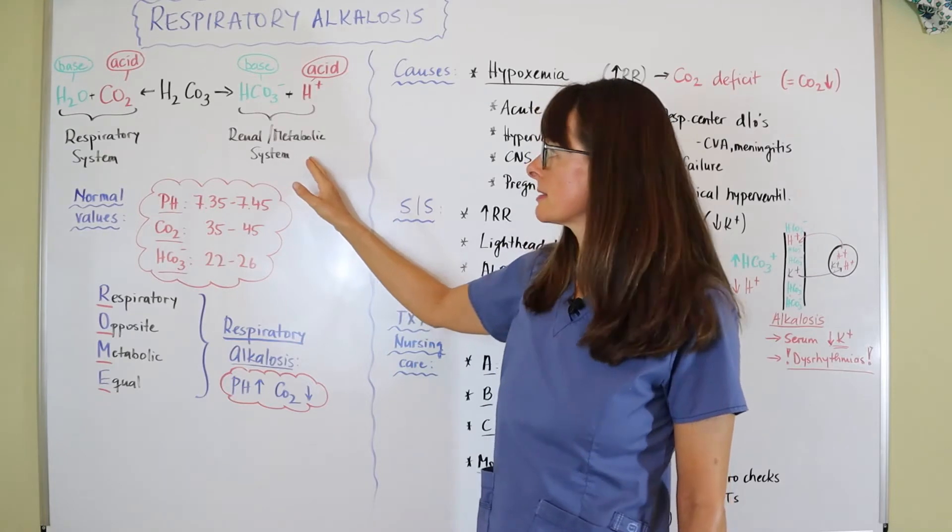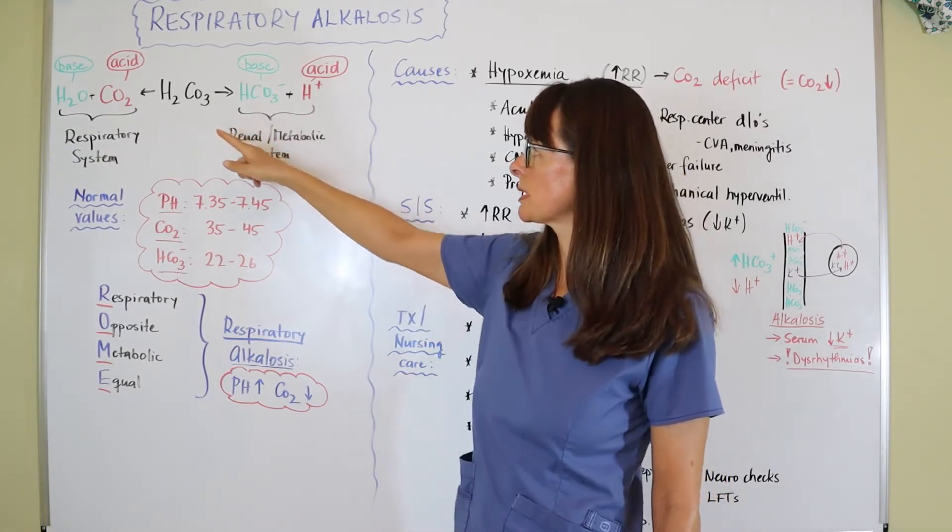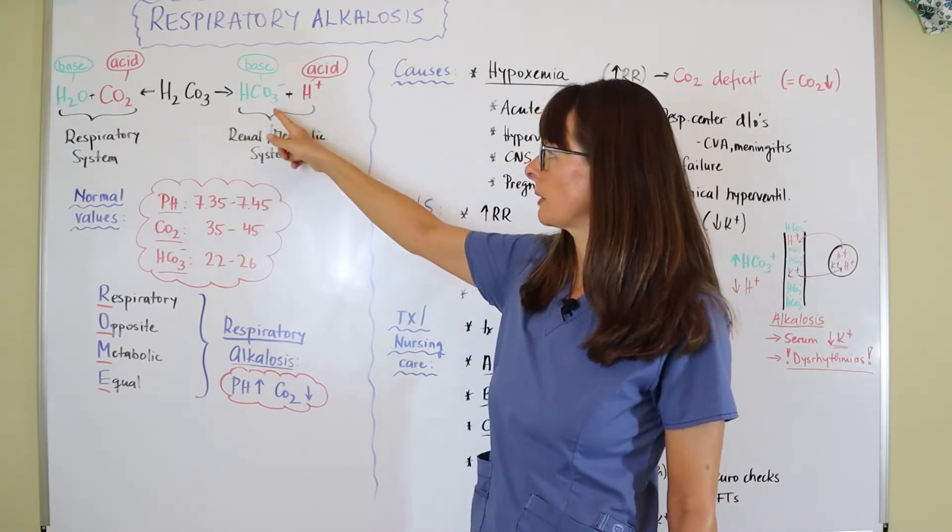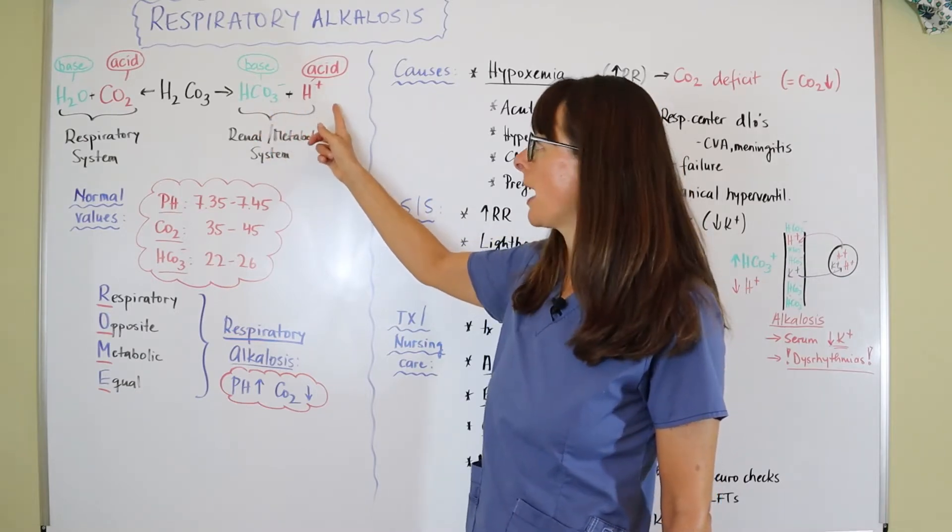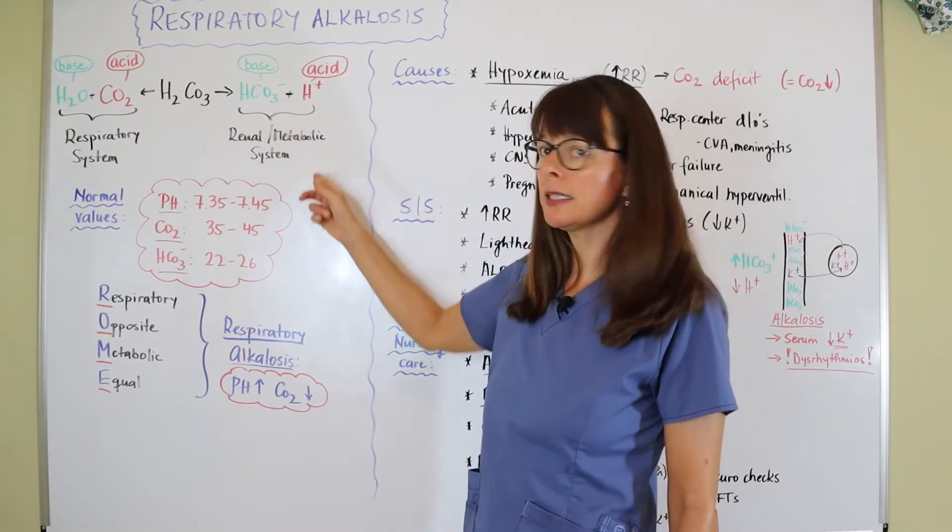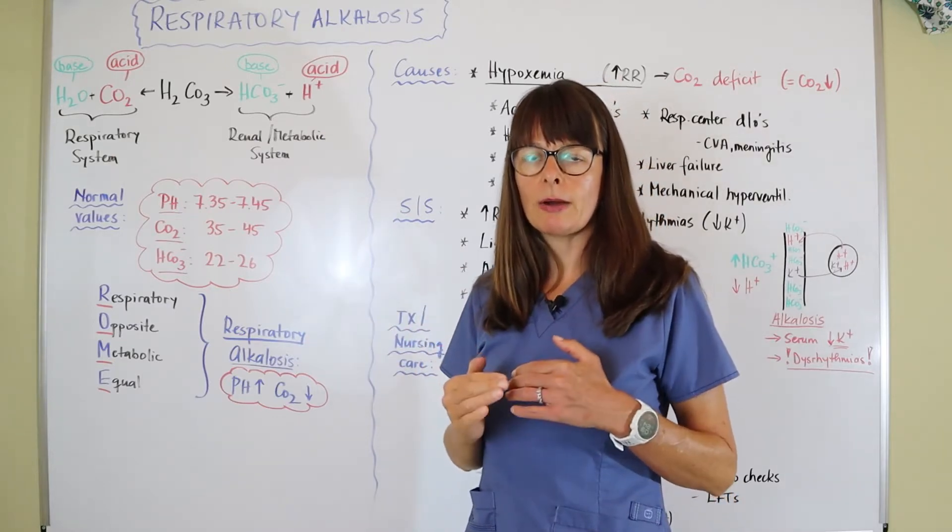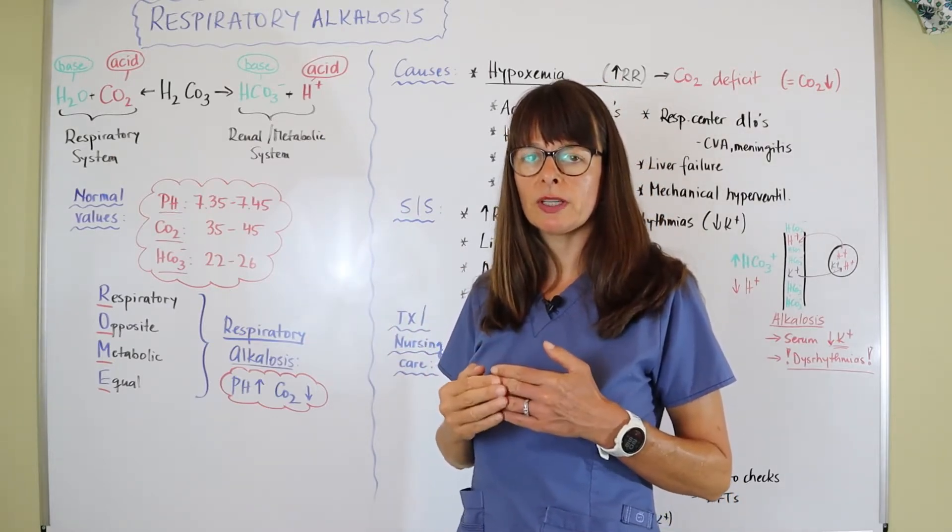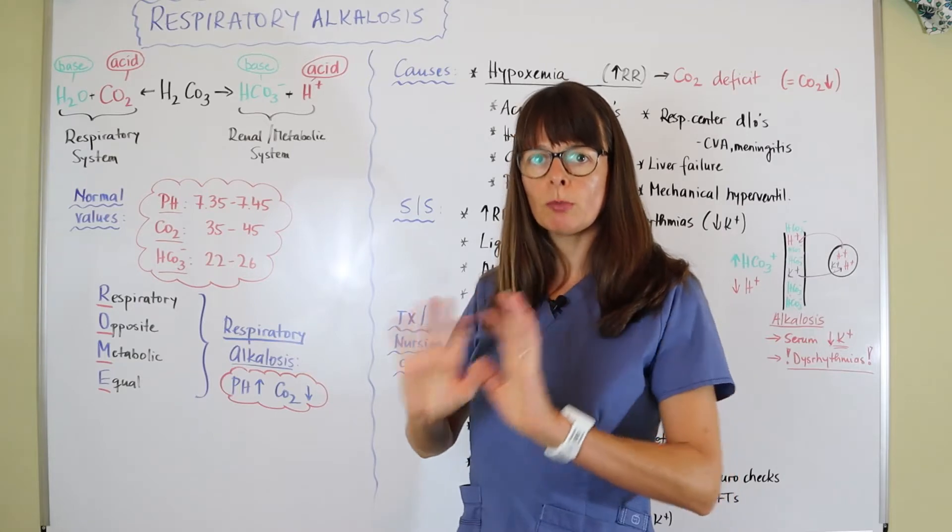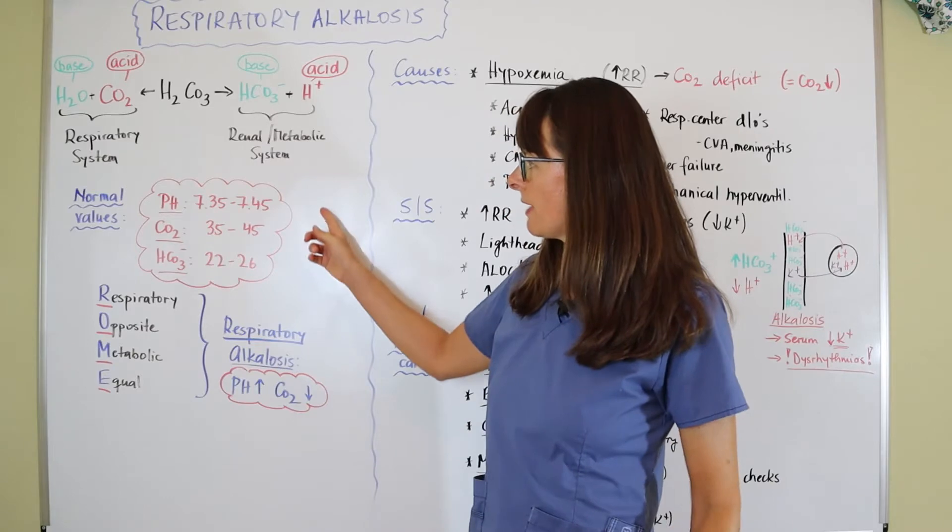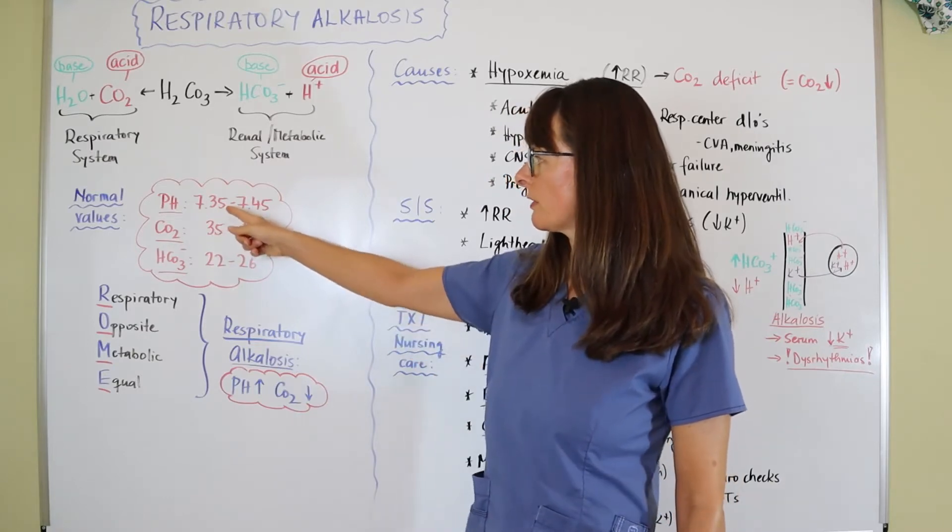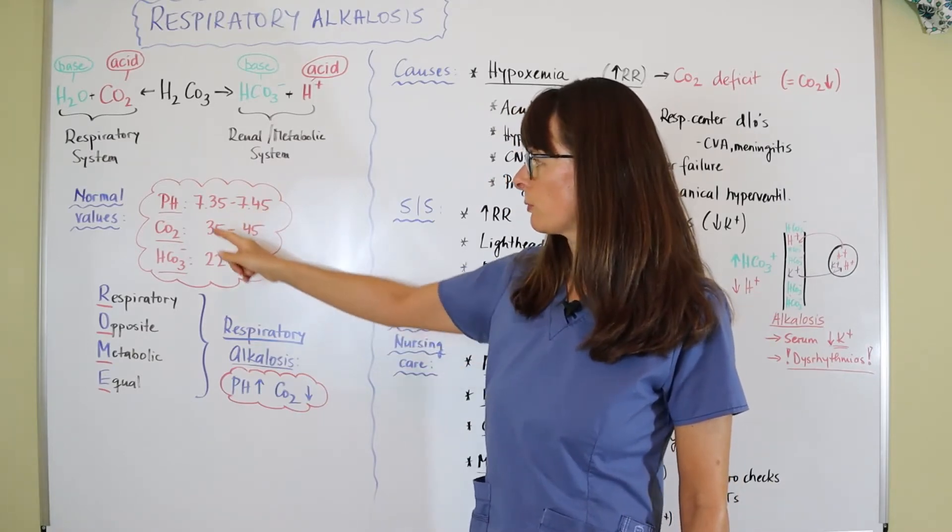In terms of the renal or metabolic system, the H2CO3 is broken down into HCO3 minus and H plus, which is bicarbonate and hydrogen ion. The kidneys regulate the amount of bicarbonate or hydrogen that they either reabsorb or excrete depending on what the pH requirements are.